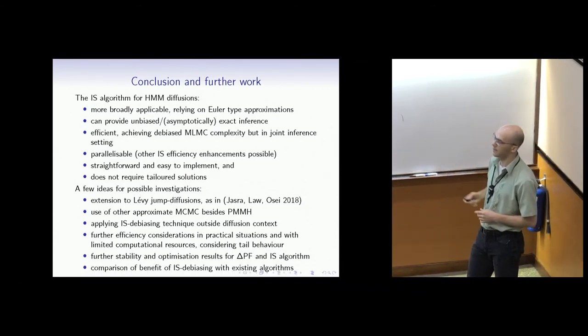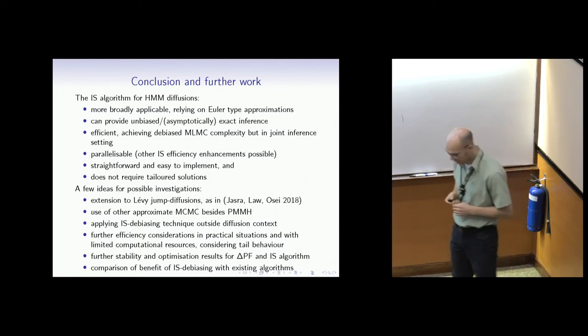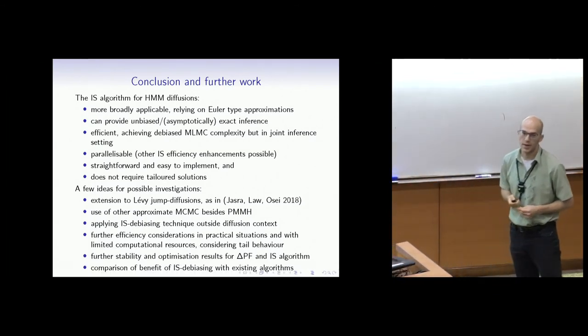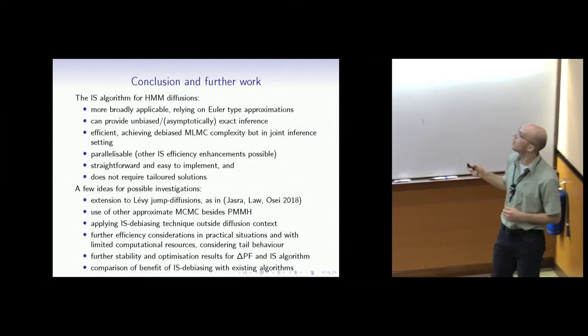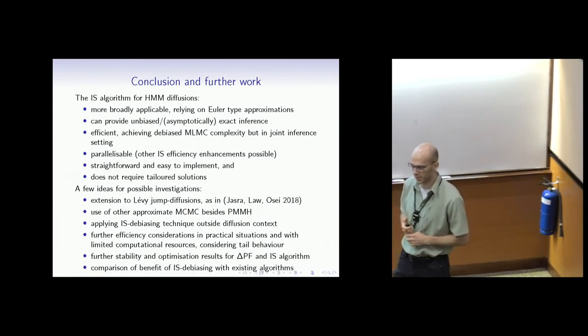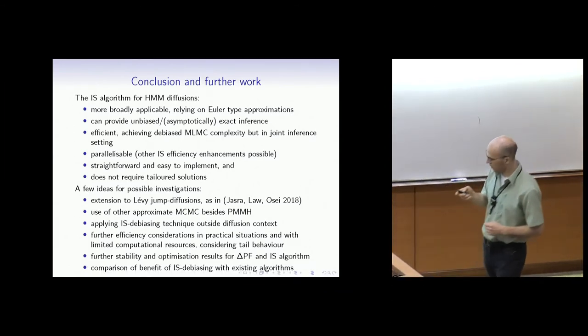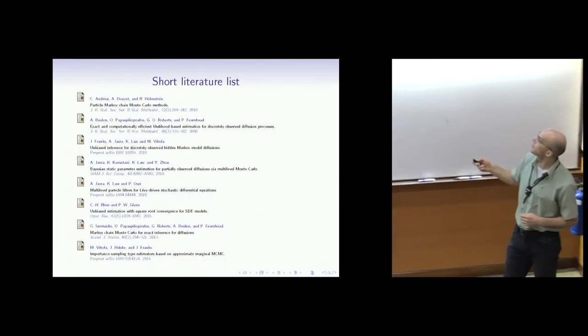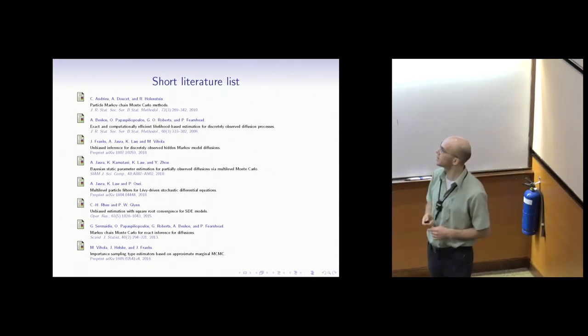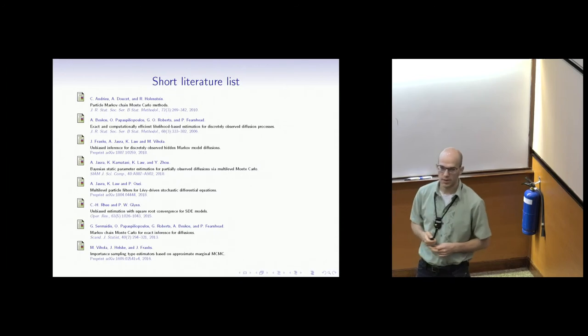There's definitely a lot of work that should be done on comparing the benefit of using the debiasing technique with existing algorithms which can be quite fast. Whether using the PMMH, the algorithm in static Bayesian parameter estimation, or using approximate methods or non-parametric methods like Gaussian process regression. We like the idea of really targeting the model you're in and doing inference in that model. But there are definitely a lot of other algorithms which may be biased but may be computationally efficient. It's definitely interesting to do a comparison - how much you gain by debiasing and how much you lose. But all in all, we are quite hopeful for this algorithm and we believe it's a step forward for unbiased inference for diffusions. Now I'll show you a short literature list where you can get started if you're interested, and I'll open the floor for questions.